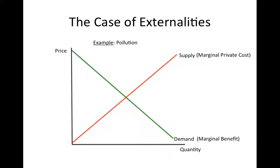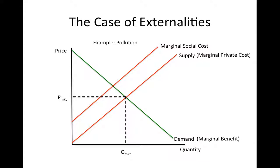An example of an externality is pollution. If production of a good generates pollution, then there is a cost to everyone who feels its effects. We can illustrate these costs by adding another cost curve to this graph. The supply curve represents the cost to producers of making the good, or the marginal private costs. The marginal social cost curve, which is above the supply curve, includes the cost of pollution. The market will come to equilibrium at the point where consumers' private benefits from the last unit consumed just equal producers' private costs of the last unit produced.